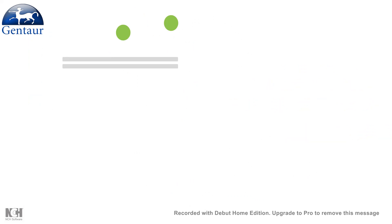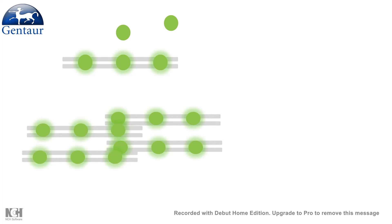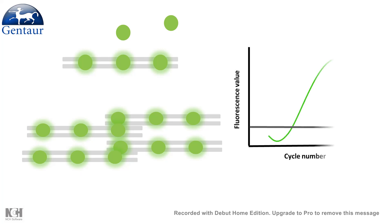Real-time PCR uses a dye called SYBR green, which is not fluorescent when it is unbound to any DNA, but when it binds to DNA it fluoresces. In the PCR step, the particular sequence of interest gets amplified, and once the sequences are amplified, more of these free SYBR green molecules bind to the DNA and start fluorescing. As a result, over time with the amplification process, the fluorescence also rises. By checking the quantitative value of fluorescence, we get to know whether a particular RNA of choice is present or not, and if present, how much.